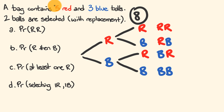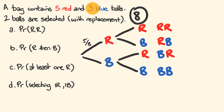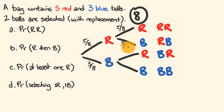The probability of choosing a red ball is five out of eight. The probability of choosing a blue ball is three out of eight. Because we're putting the balls back with replacement, the second pick also has a five out of eight chance for red and a three out of eight chance for blue on every branch.